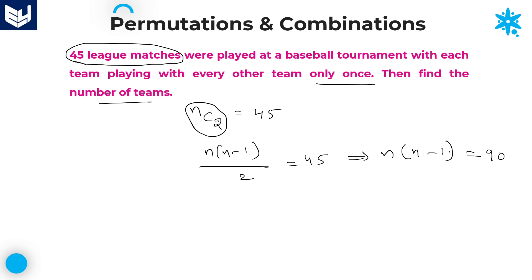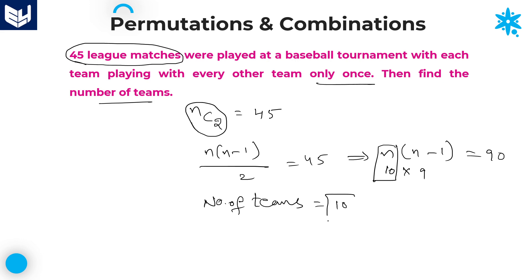If you multiply out, you get a quadratic equation, so instead use the trial and error method. n and n−1 are consecutive numbers whose product is 90. If n = 10, then 10 × 9 = 90. Therefore, the number of teams is equal to 10.